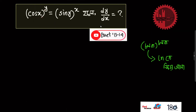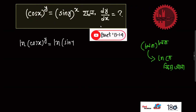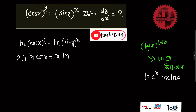So, cos x to the power y equals to sin y to the power x. Using the logarithm property — if we have ln of something to the power x, we can write x times ln. So we can write y times ln(cos x) equals to x times ln(sin y).